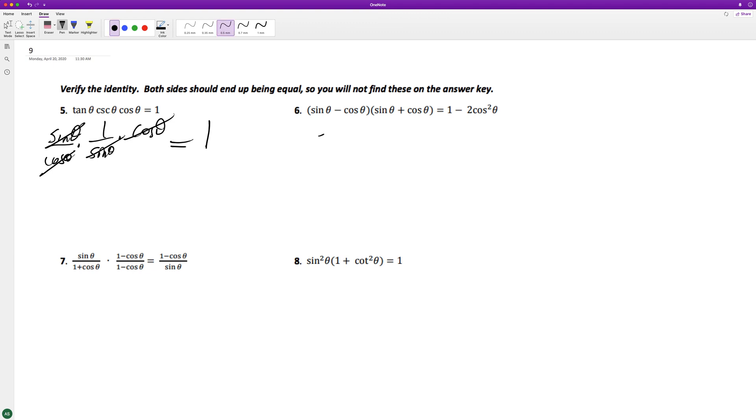So for our second part here, we get difference of perfect squares, sine squared theta minus—I mean, I'm skipping a couple of things here, but the middle terms cancel out and we get this.